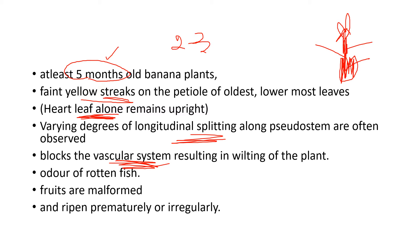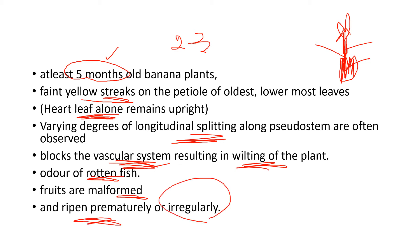Since the organism moves upward from the soil, the first main organ infected is the vascular system. Blockage of the vascular system ultimately results in wilting of the plant. In cross-section, you can see black patches everywhere around the stem. The plant also produces a very pungent odor like rotten fish. Fruits formed from infected plants are malformed, not palatable, ripen prematurely, and have no sale value.